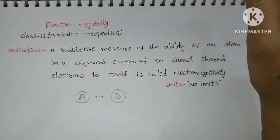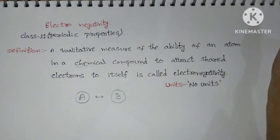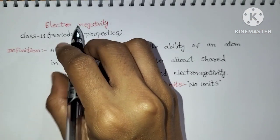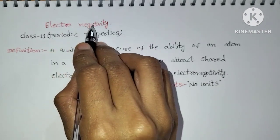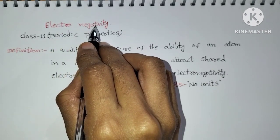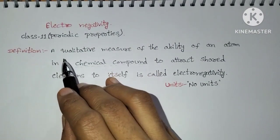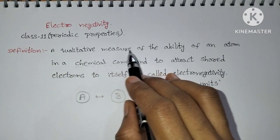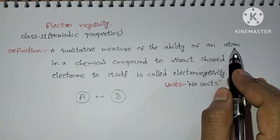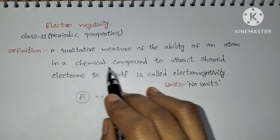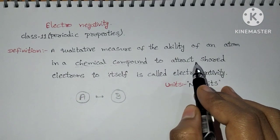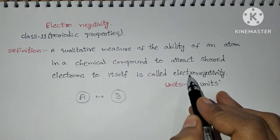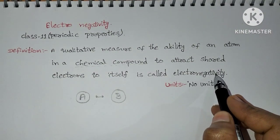Hi students, this is your Jhamsimam. In this video, I am going to explain one more periodic property — that is electronegativity. Electronegativity is nothing but a qualitative measure of the ability of an atom in a chemical compound to attract shared electrons to itself.